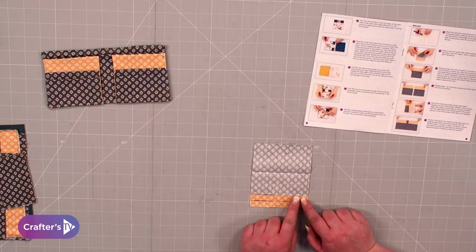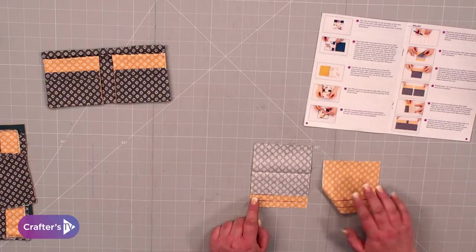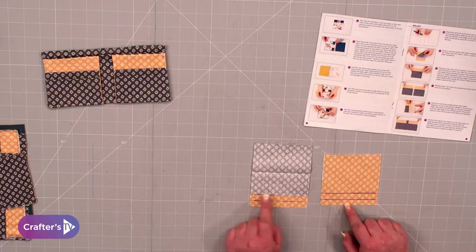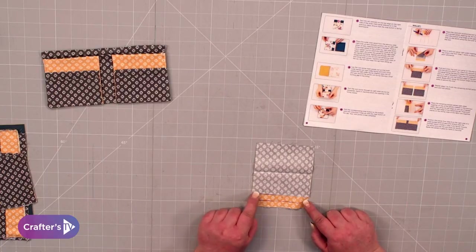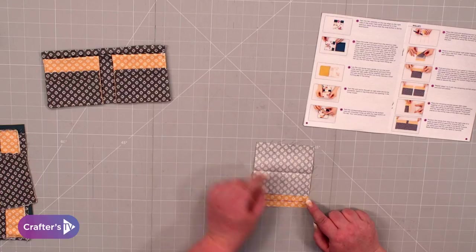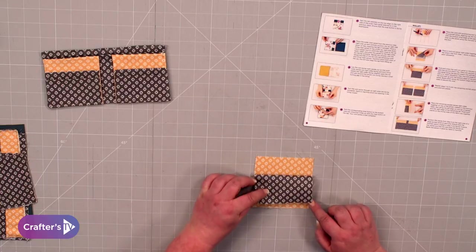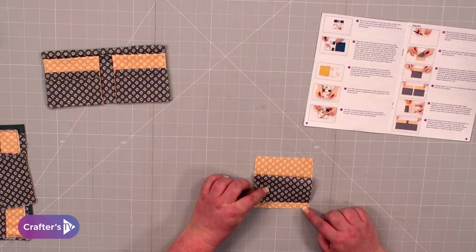You're going to line it up with the first line. We've got two lines drawn on here, so we're going to line it up with the first line. Then with a quarter inch seam on your machine, you're going to stitch along there. Then bring this down and line it up with the second line.